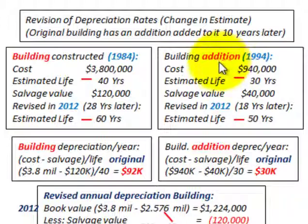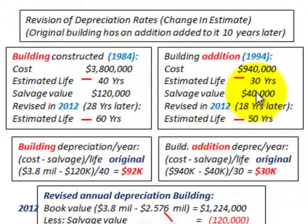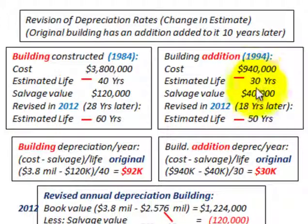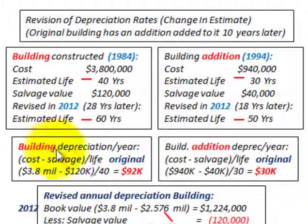The same applies for our addition. We have a cost of $940,000, an original estimated life of 30 years, and a salvage value of $40,000. Then, again in 2012 — 18 years later — we revised the addition's estimated life from 30 years up to 50 years.